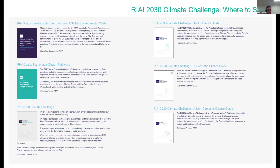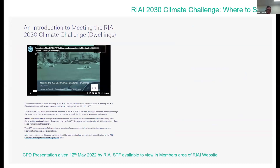There's a suite of documents associated with the climate challenge. On the bottom left there is the 2030 climate challenge document published in October 2021, preceded by the RAI Sustainable Design Pathways Guide published in April 2021. In September 2019, the RAI Sustainability Current Policy was published for the global environmental crisis. Last October, three new guides were published: an architect's guide and domestic and non-domestic clients guides.